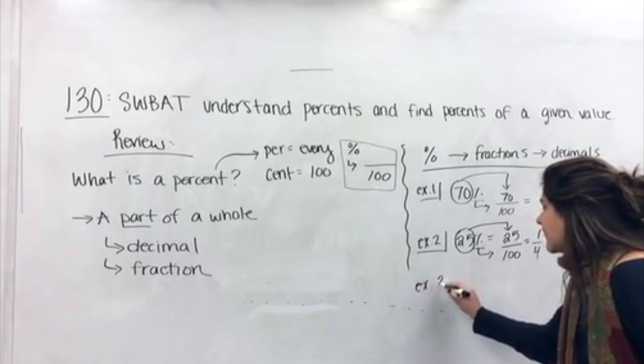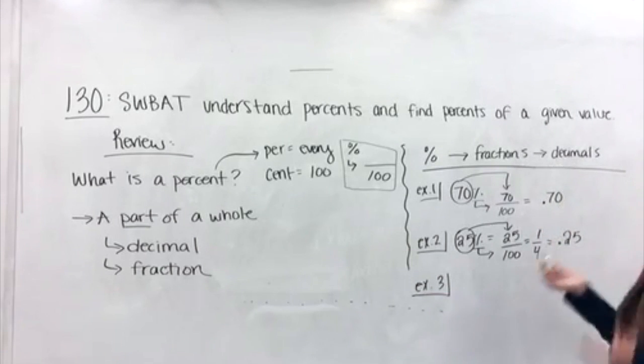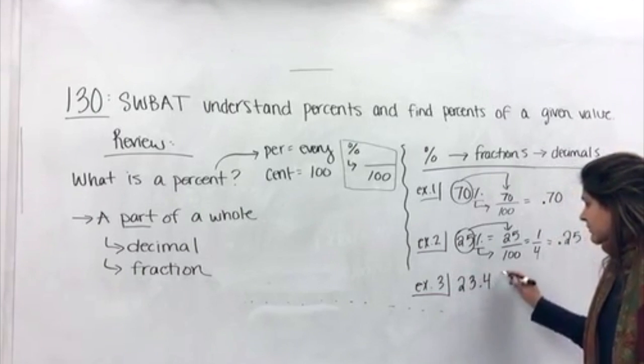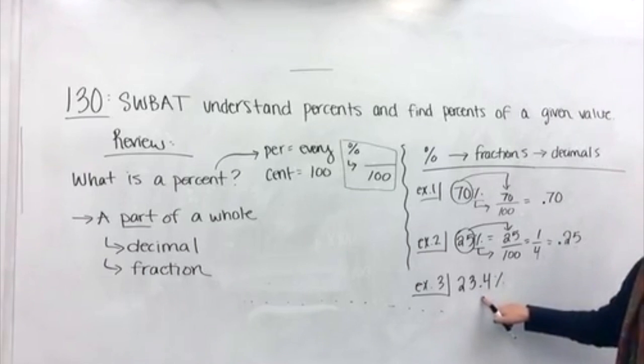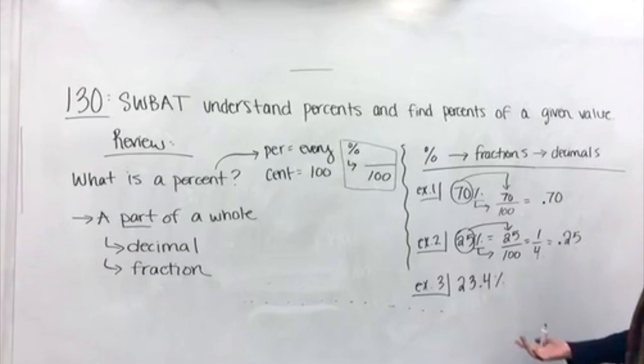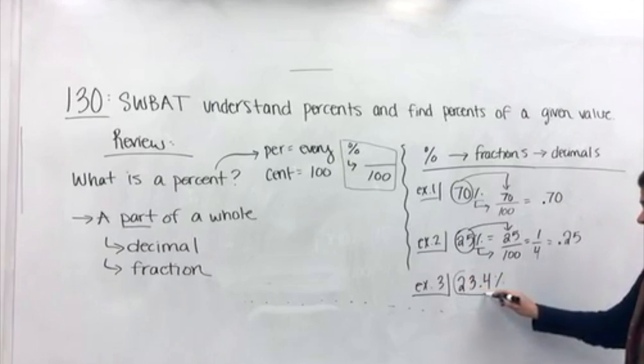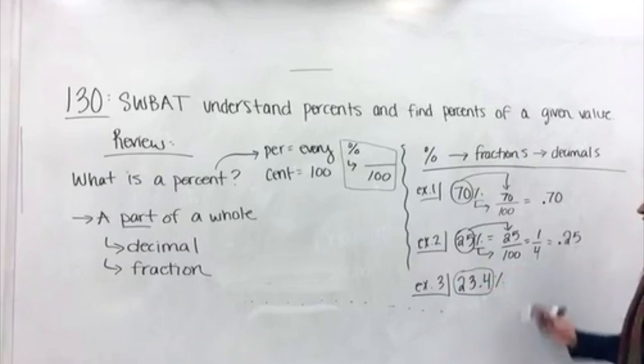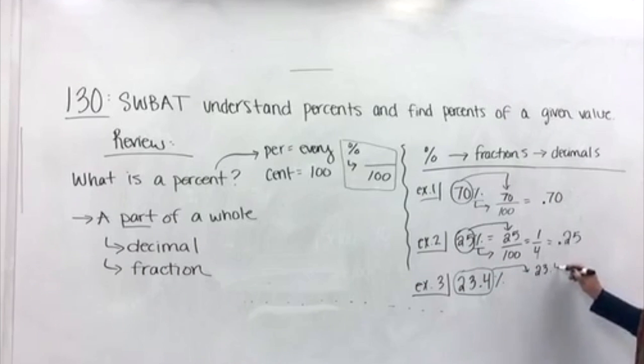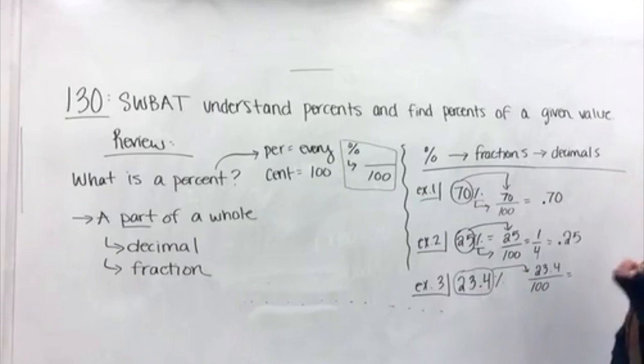Twenty-five percent is the same thing as, again, I'm going to show all my work for this, twenty-five and percent meaning out of one hundred. This reduces or simplifies to one-fourth. If you divide either of these equivalent fractions, you will get .25. So, twenty-five percent is the same as one-fourth, is the same as .25 or twenty-five hundredths. Our third example here, let's go ahead and take twenty-three point-four percent.